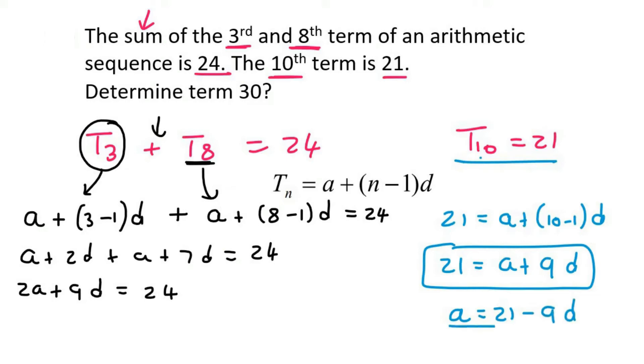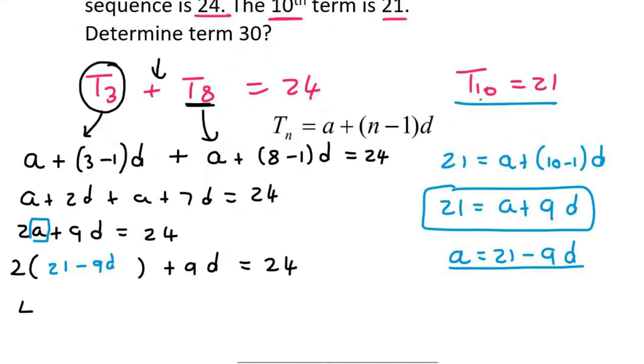I'm then going to plug that expression over here. So it's going to be 2 and then in brackets, we're going to put 21 minus 9D plus 9D equals 24. And then multiply in, that will be 42 minus 18D plus 9D equals 24.